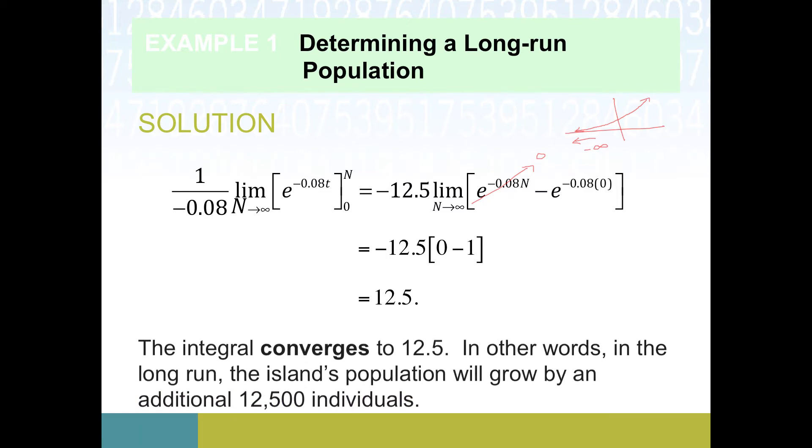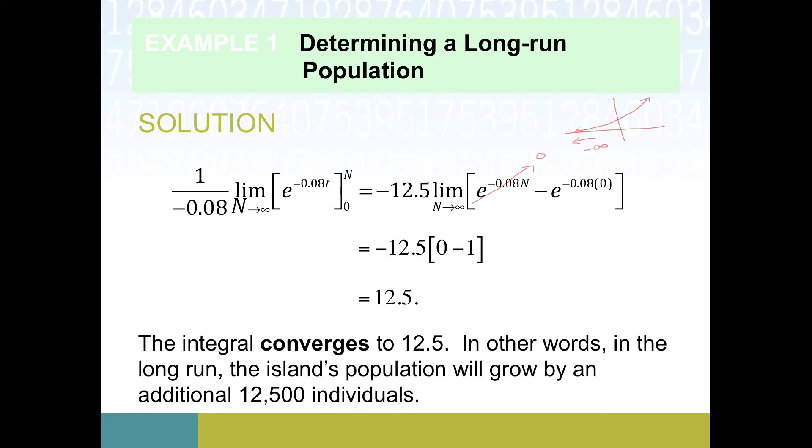Remember this is still in thousands because it was in thousands of individuals per year. So we're going to end up with 12.5. So in other words, this is the projected growth in the island's population. I want to underline this because we don't know the original population. We don't know what p0 was. So we can't say what the new population is actually going to be, but we can say how much we anticipated growing by if this formula actually held. So this is kind of intriguing, right? It means that you can keep going on forever and ever and ever and the growth according to this model will never grow to more than 12,500 individuals. So it slows down dramatically as you go along, eventually not adding anything more than that.